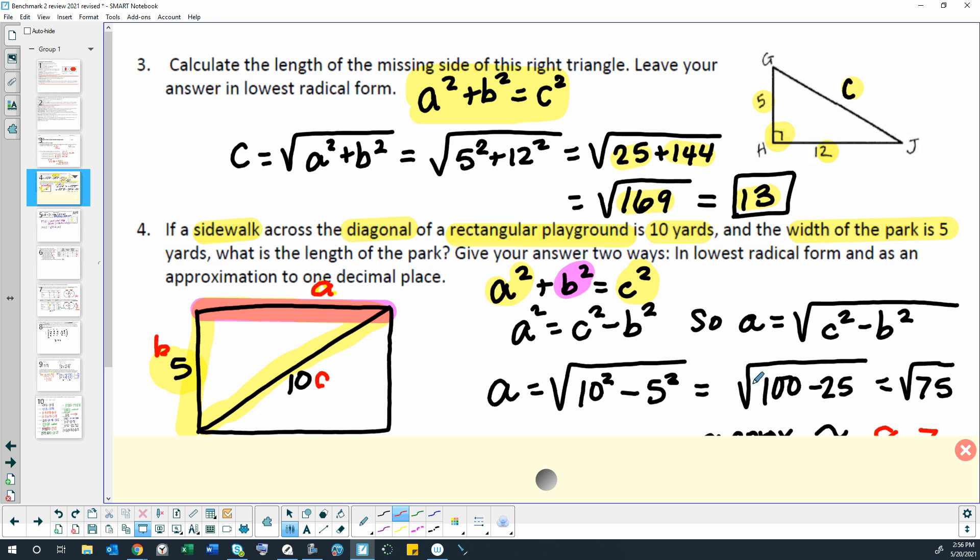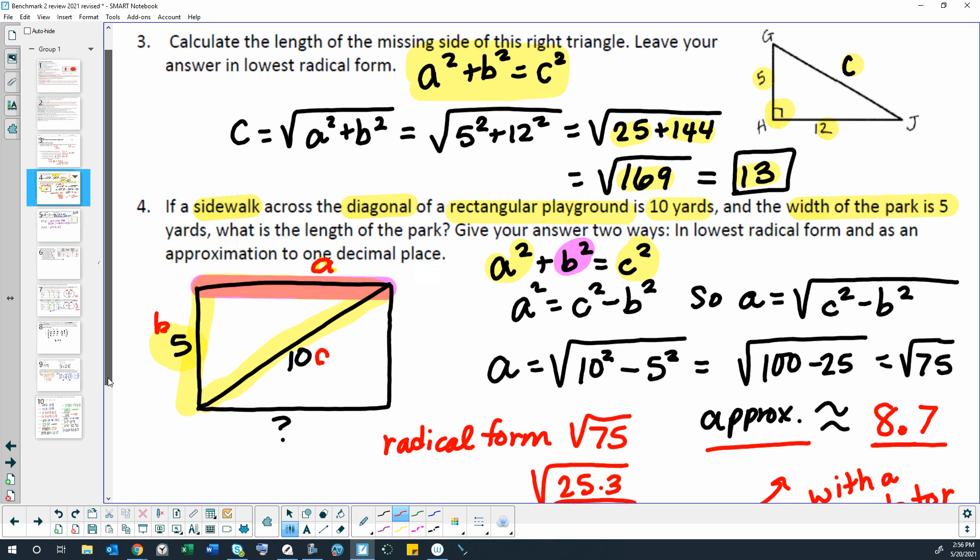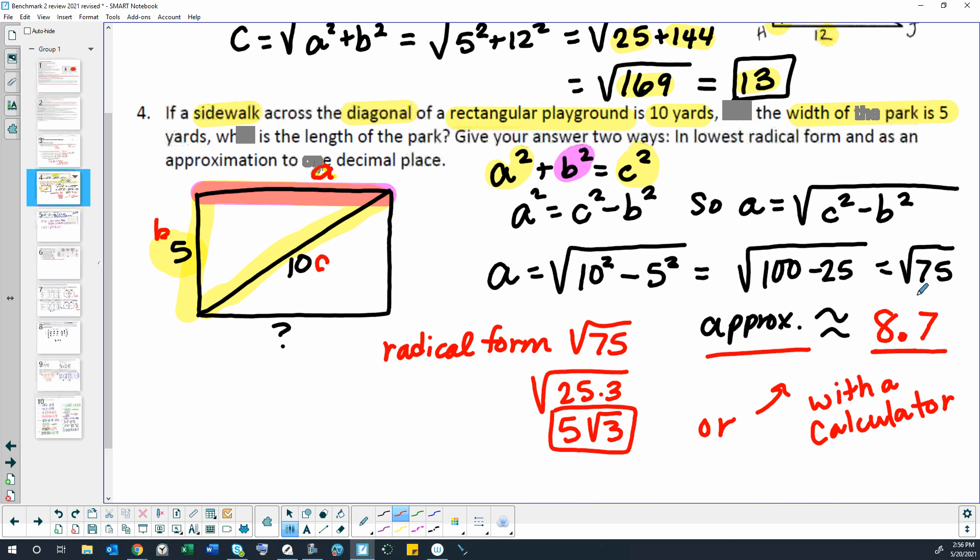I'm going to plug 10 in for C, so 10 times 10 is 100, and 5 in for B, and 5 times 5 is 25, and 100 subtract 25 is 75. That gives us the square root of 75, which we could just put in a calculator and get 8.66 something. That would round to approximately 8.7 yards.